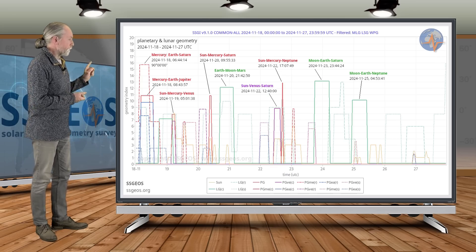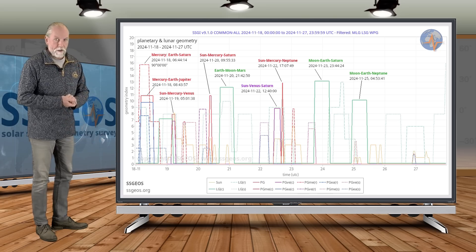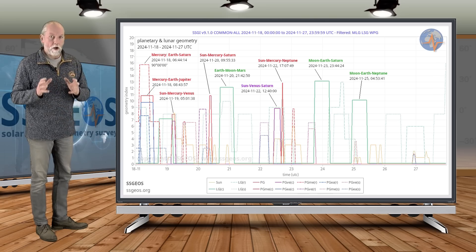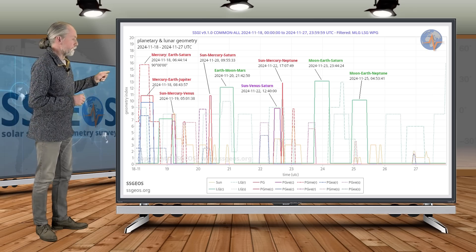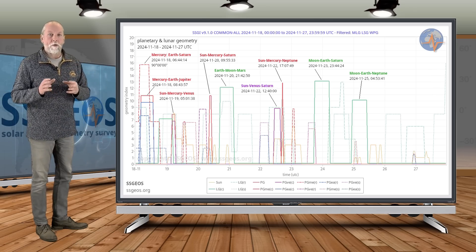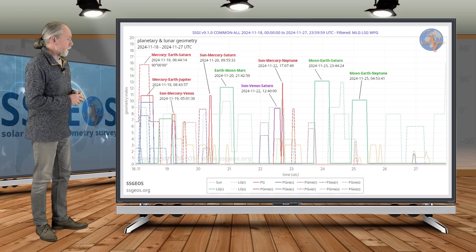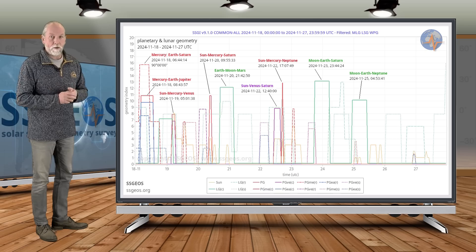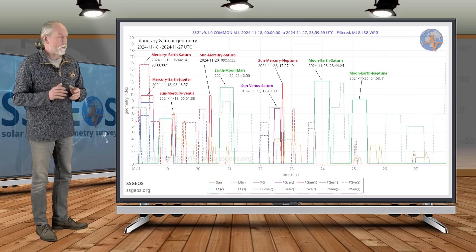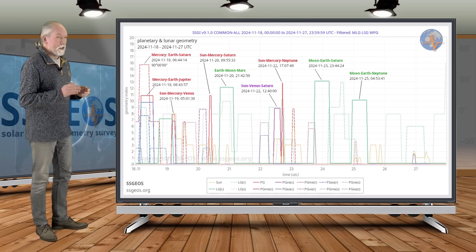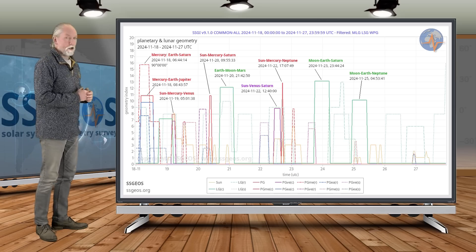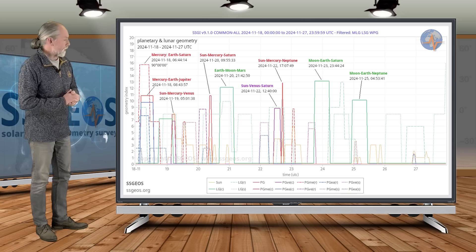We have two lunar conjunctions also with Saturn and Neptune. They were both involved in the planetary conjunctions on the 22nd. We have Moon-Earth-Saturn late on the 23rd and Moon-Earth-Neptune early on the 25th. There can be a large earthquake following those lunar conjunctions, and then we would end up around the 26th. That's the most critical time following lunar conjunctions if they follow on planetary conjunctions.